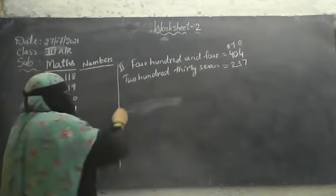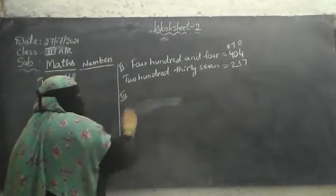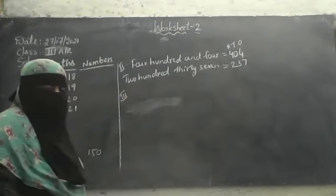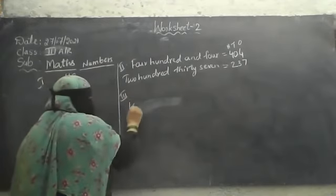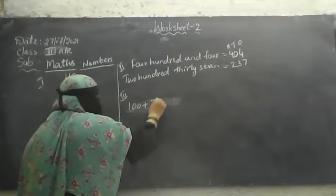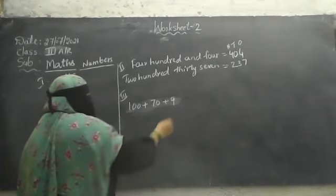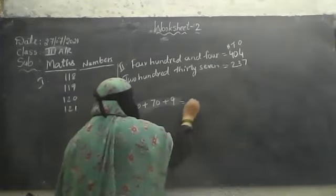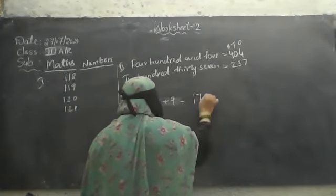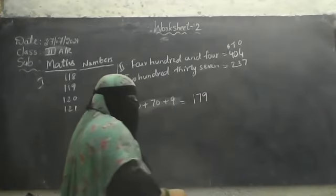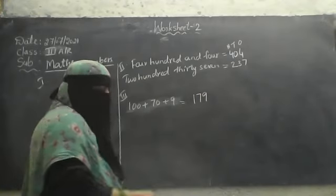Third section is write the short form. For example, if I write 100 plus 70 plus 9, how I should write this? 179.